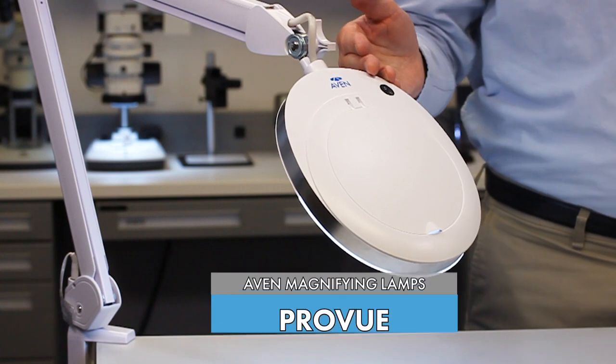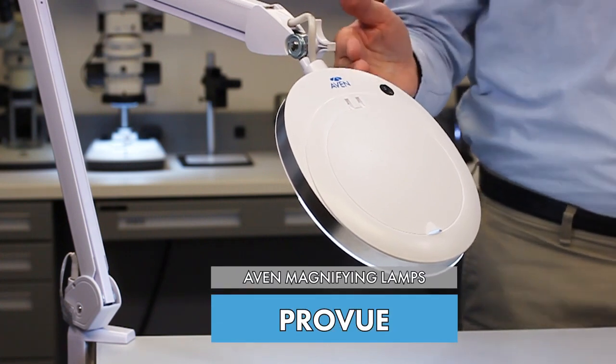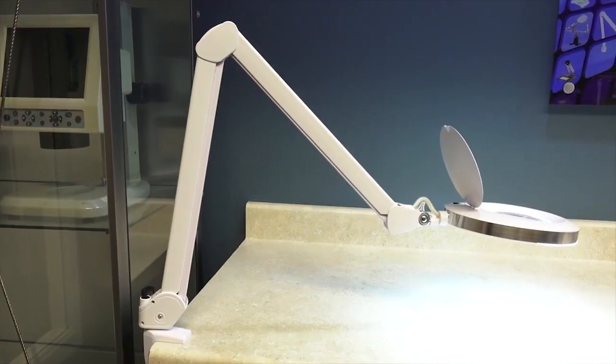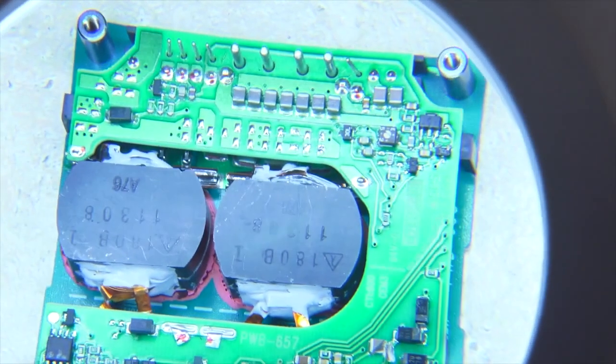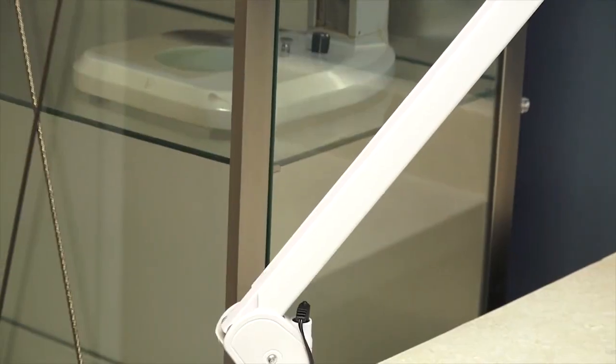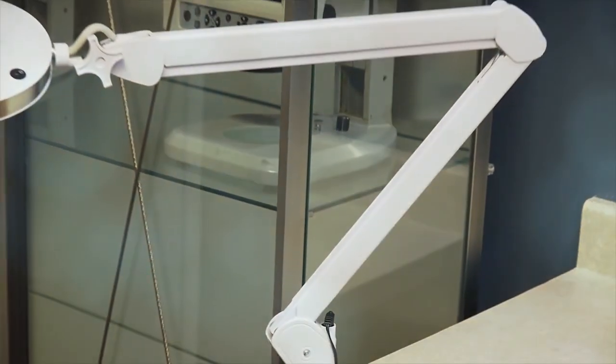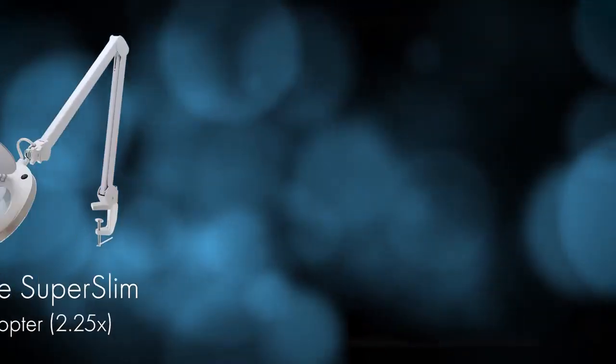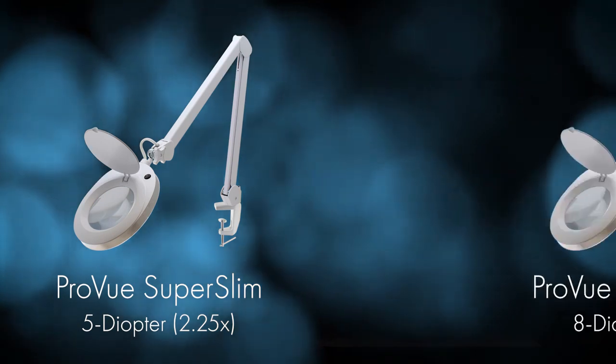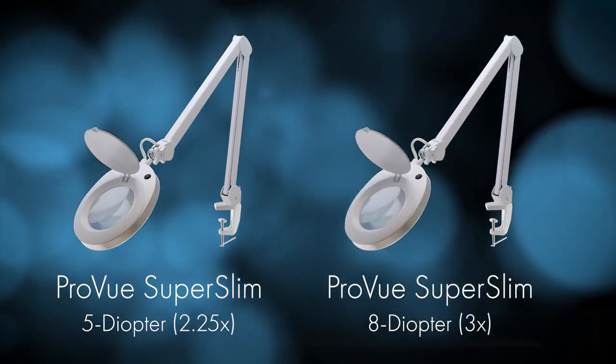The first one here that you're looking at is the ProView Super Slim. The Super Slim is, like the name says, slim and lightweight. We offer it in a 5 diopter and an 8 diopter round lens with a dust cover. So that is 2.25x and 3x.